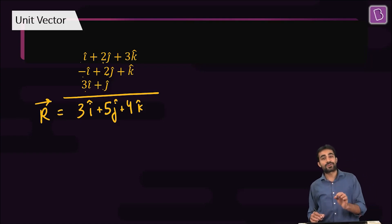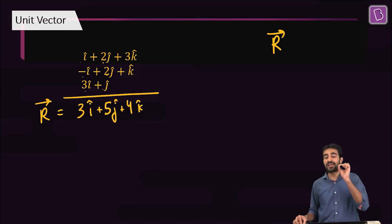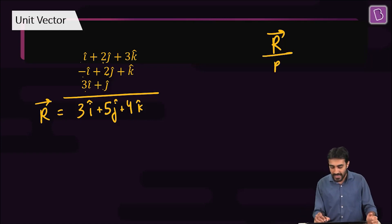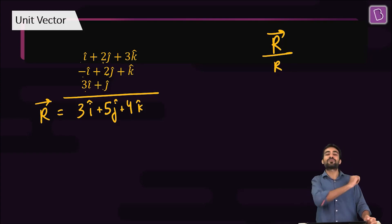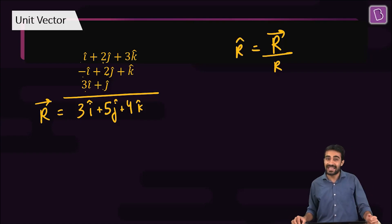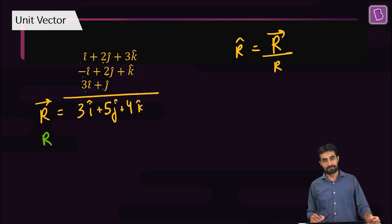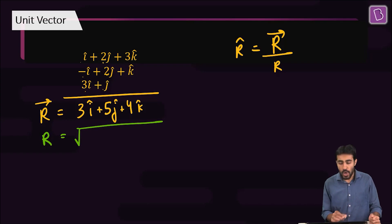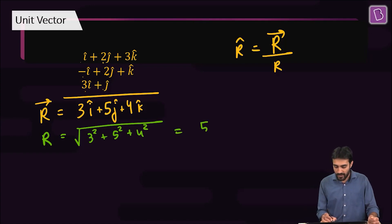Now we want to find the unit vector along r vector. The unit vector along r vector has the same direction as r vector, but if we divide r vector by its own magnitude, we get a special vector whose magnitude is unity — this is the unit vector r-cap. The magnitude of r vector is the square root of three squared plus five squared plus four squared, which gives us five root two.